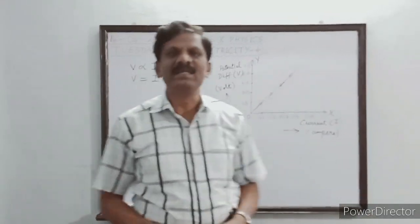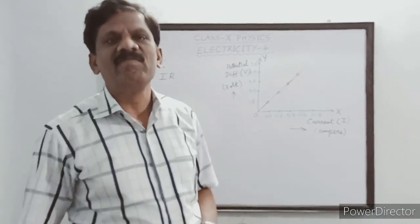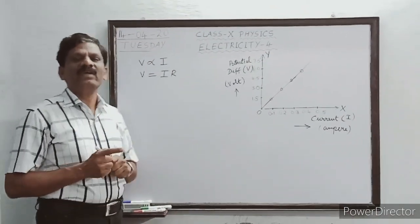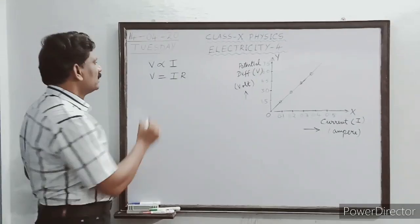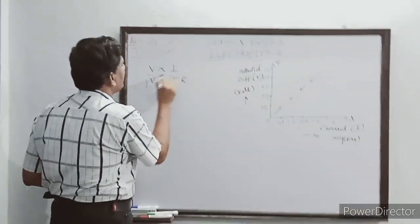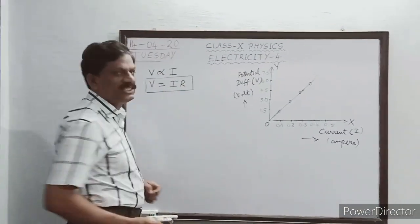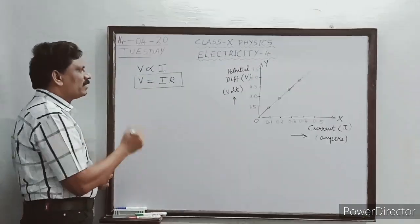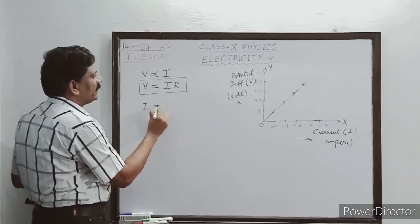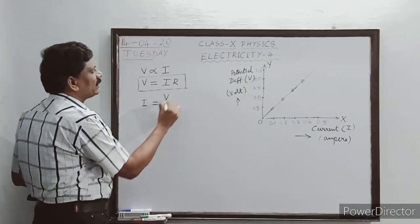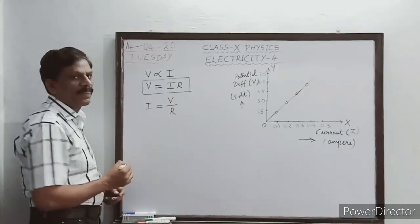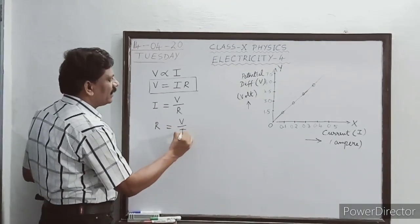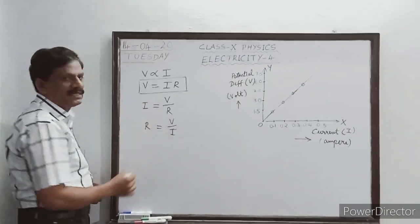The mathematical expression of Ohm's law can be written in three different ways. One way is V equal to I into R. From this equation, I is equal to V by R, or R is equal to V by I. All three equations are called Ohm's law. For solving numerical problems, whichever quantity is asked, you use that particular formula.